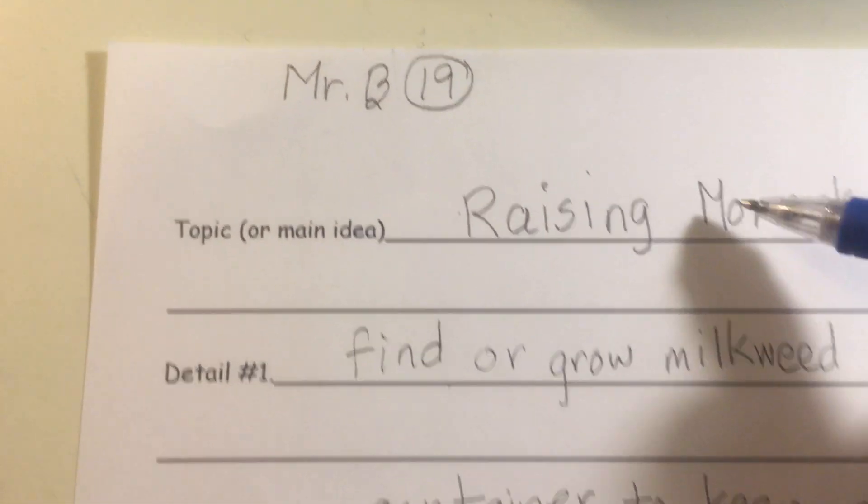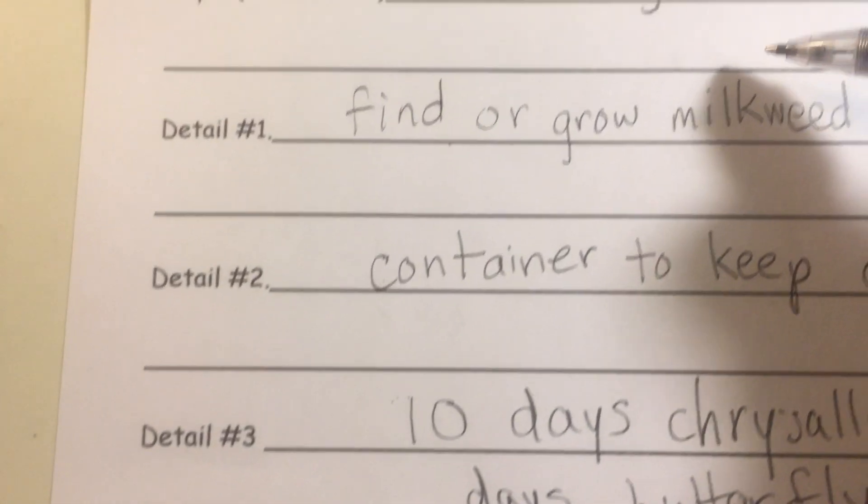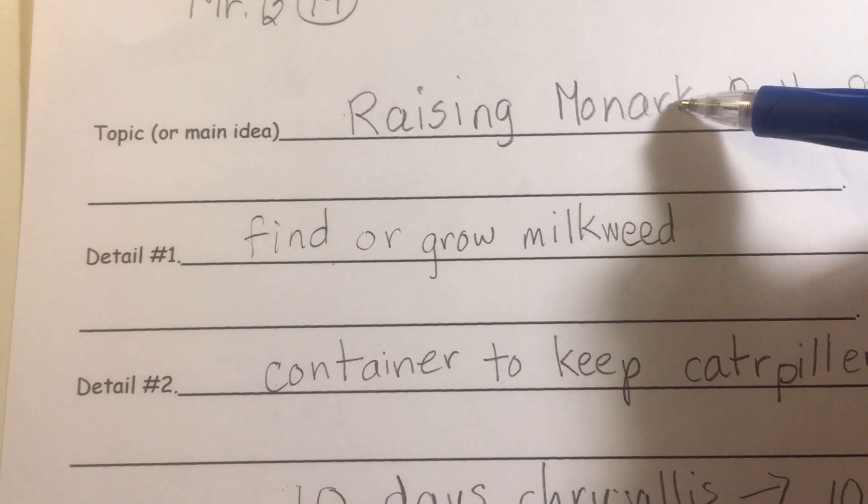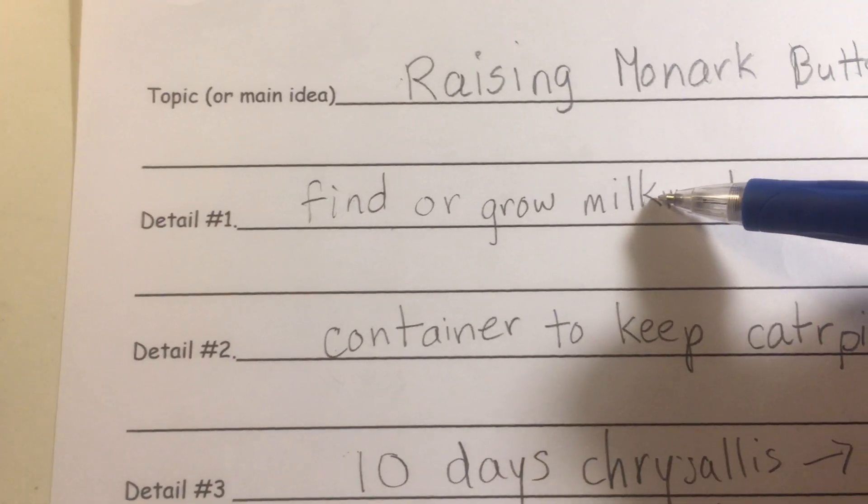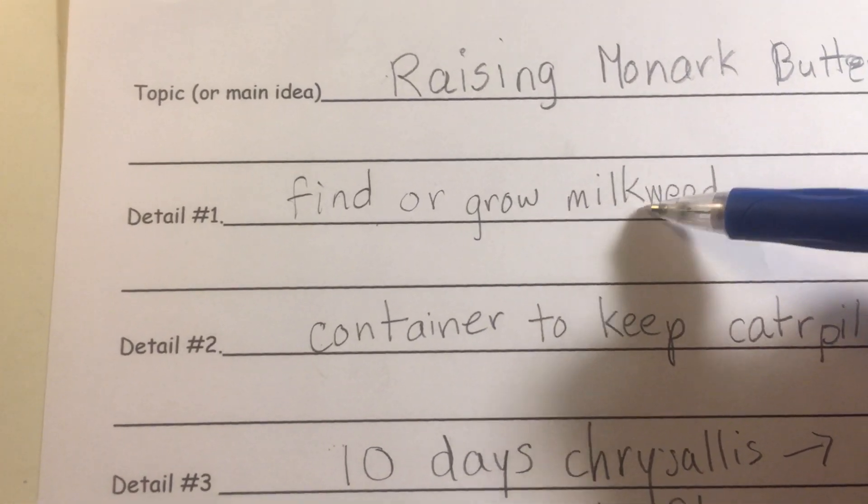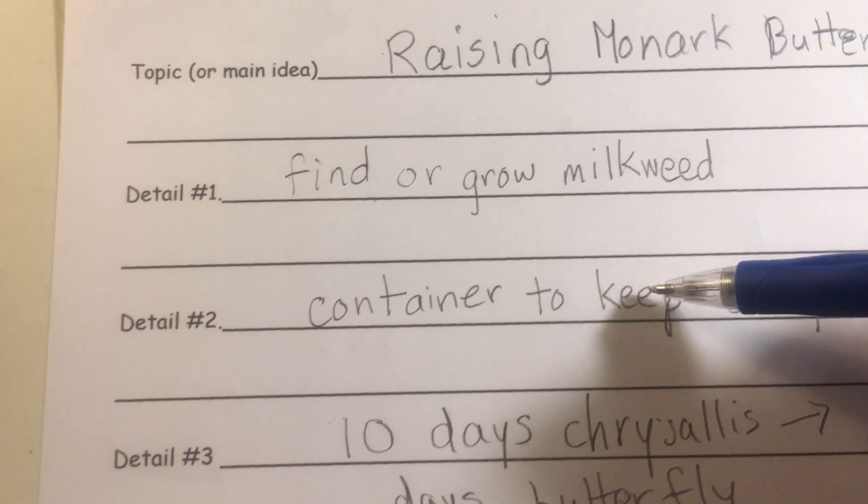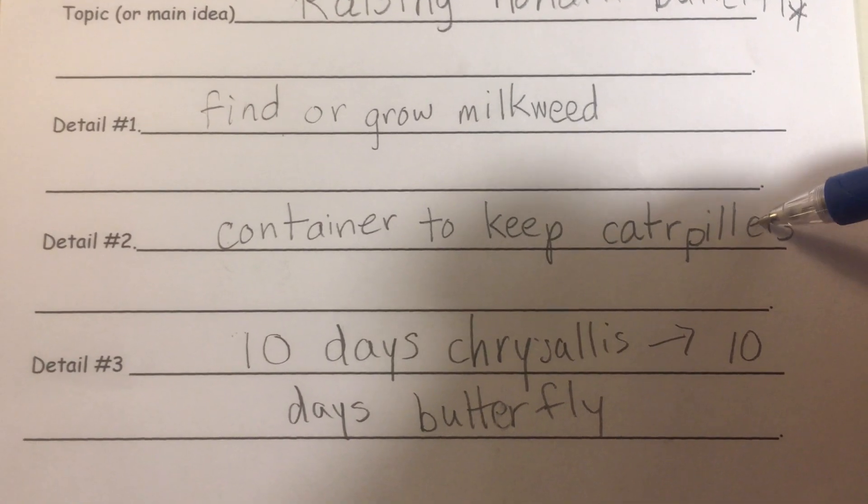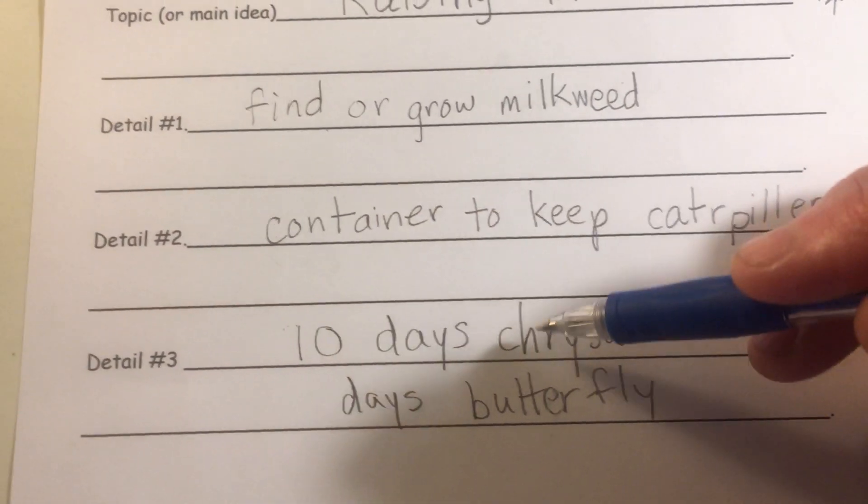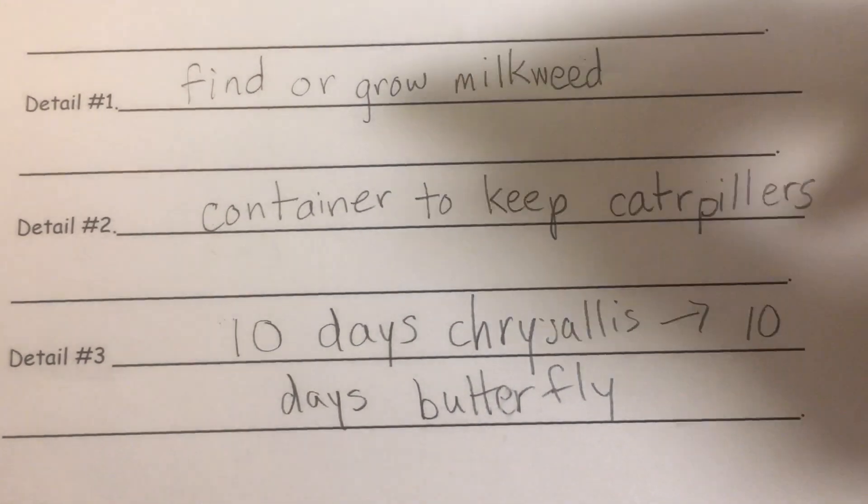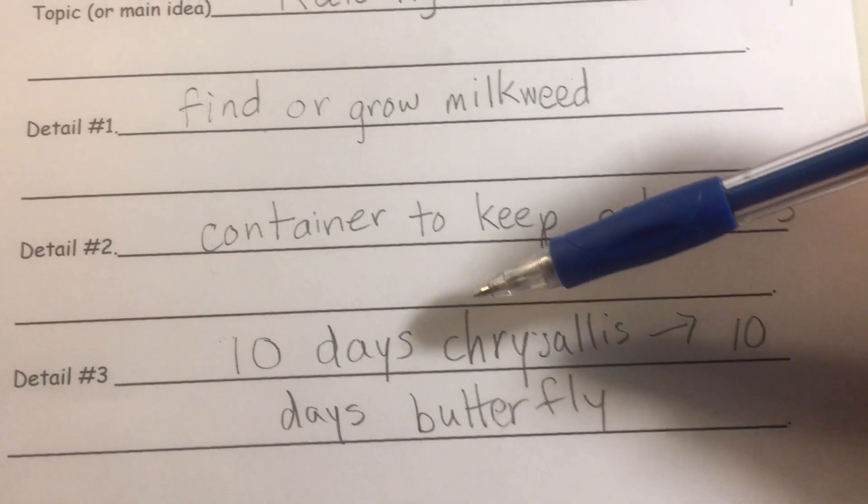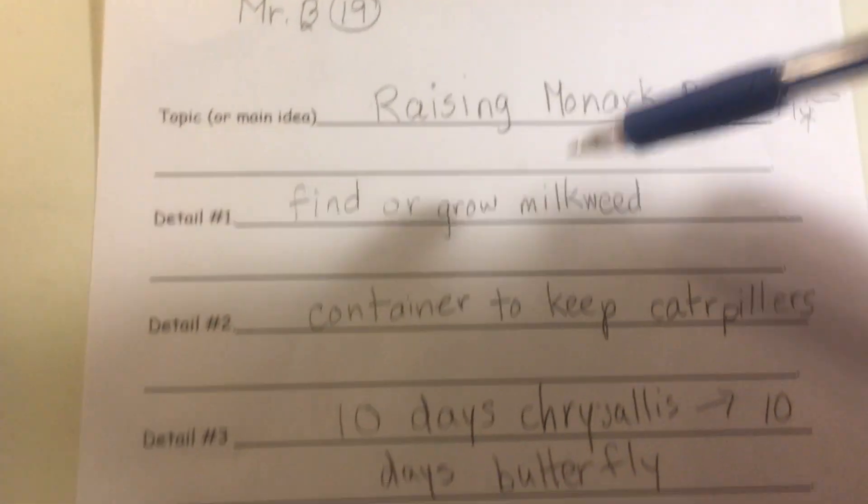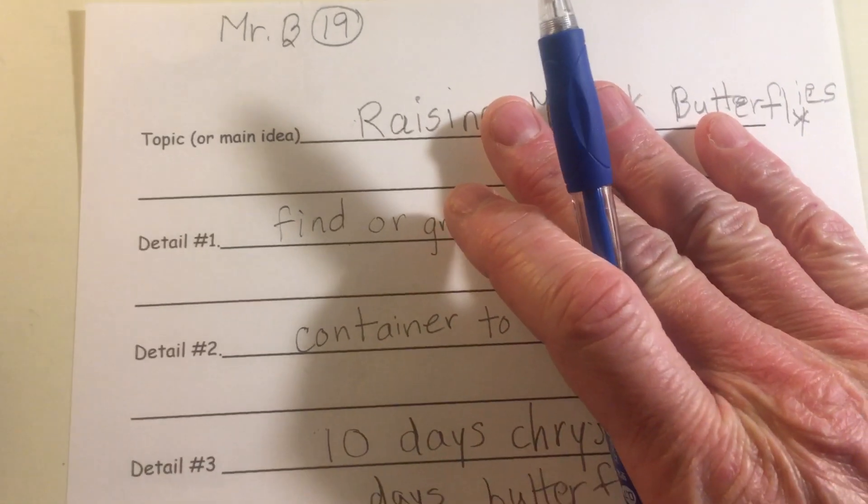So that's going to be my main idea, my topic sentence, and then my three detail sentences are all going to be about my main idea topic sentence. I thought that the first detail would be that if you're going to raise monarch butterflies, you got to find or grow your own milkweed. My second detail is you got to have some containers to keep your caterpillars in once you find them or your eggs. And then my third detail is after you keep the caterpillars for about 10 days they'll turn into chrysalises and then after 10 more days they'll become a butterfly.